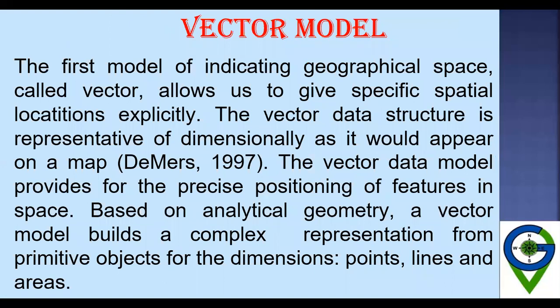The vector method of indicating geographical space allows us to give a specific spatial location explicitly. The vector data structure is representative dimensionally as it would appear on a map. The vector data model provides for the precise positioning of features in space. Based on analytical geometry, a vector model builds a complex representation from primitive objects for the dimensions that include points, lines, and areas or polygons.